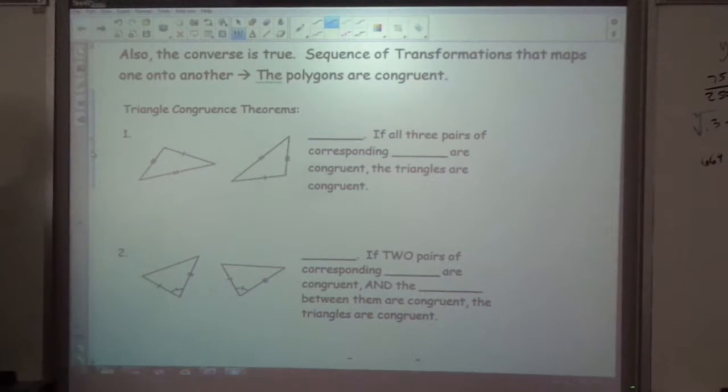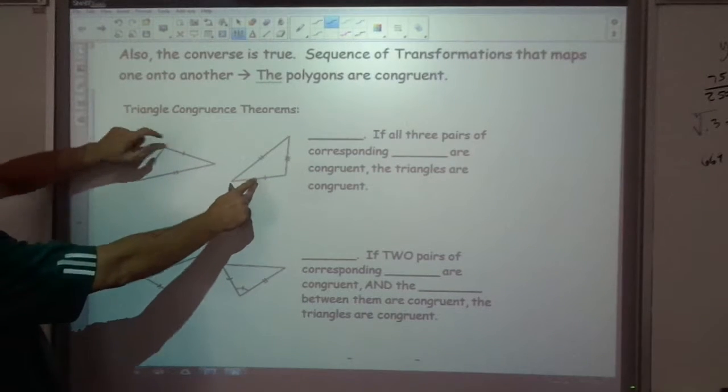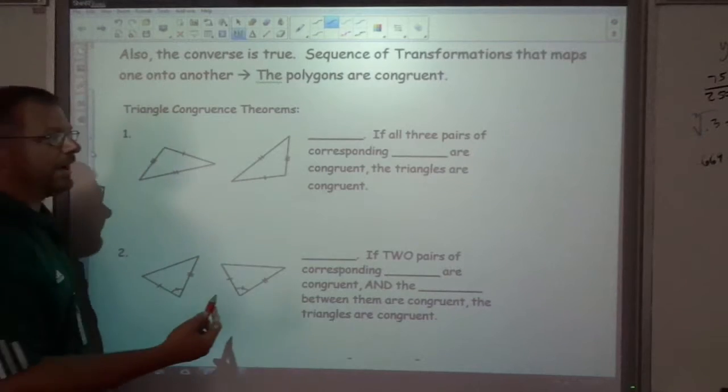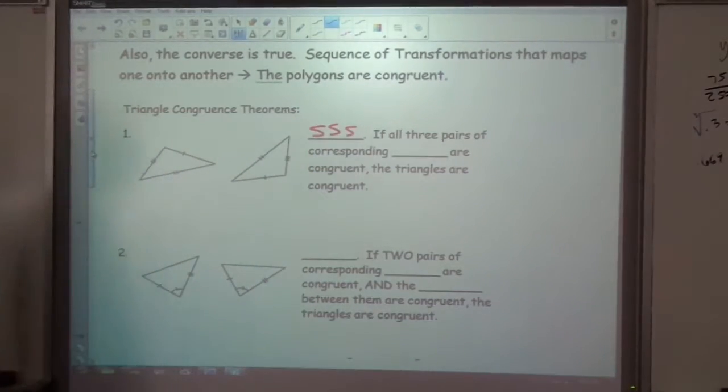The first is this. If you look here, these two triangles have the same side, the same side, the same side. If all three sides are the same, this is called side, side, side.